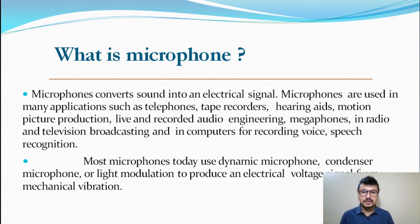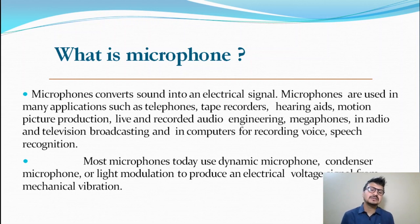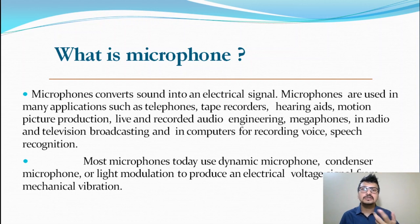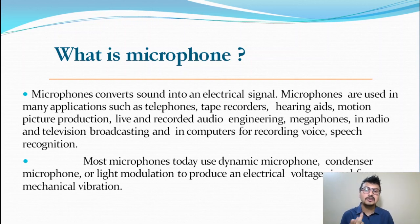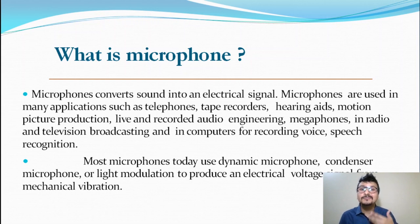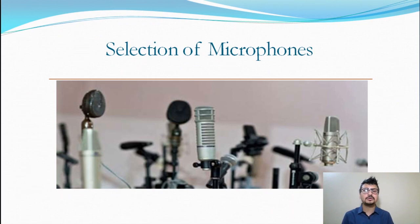Most microphones today use dynamic, condenser, or light modulation to produce an electrical voltage signal from mechanical vibration. When you speak, the vibration produced by your vocal cords — you can feel it by placing your fingers on your throat — goes to the microphone and produces the electrical voltage signal from that mechanical vibration. So it is very important to select a microphone as per your program and need.